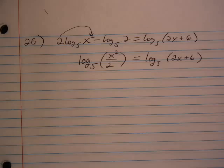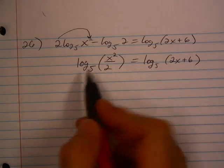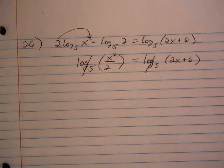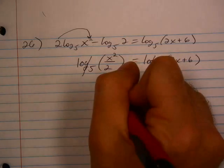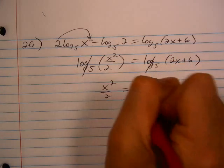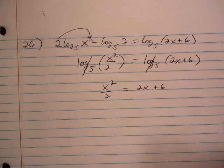Now, good for us, we have one log on each side, which means we can just cancel those logs and deal with what's left over. So all we're left with is x squared over 2 equals 2x plus 6.